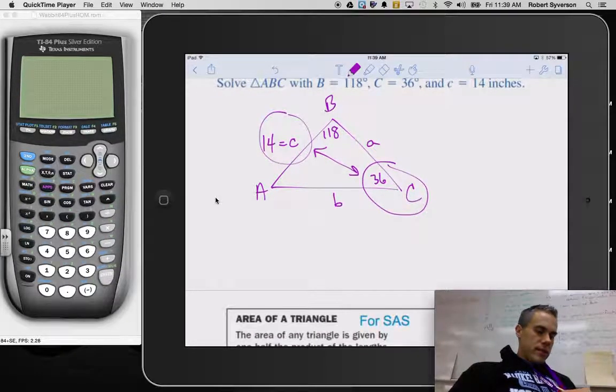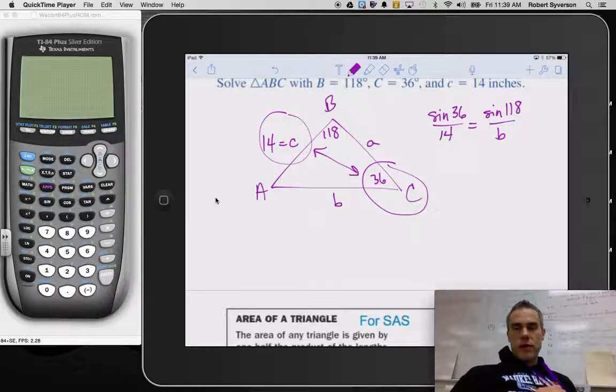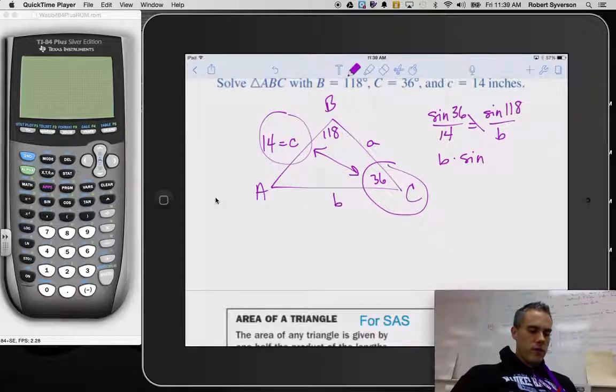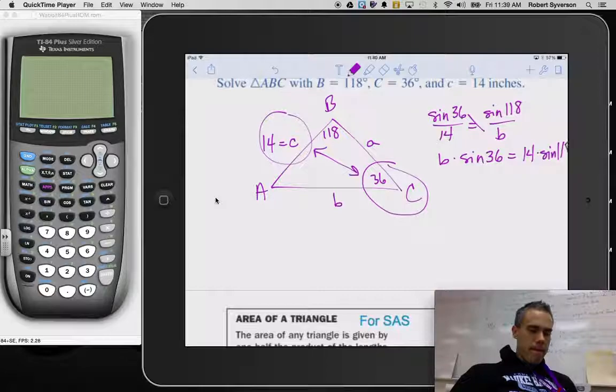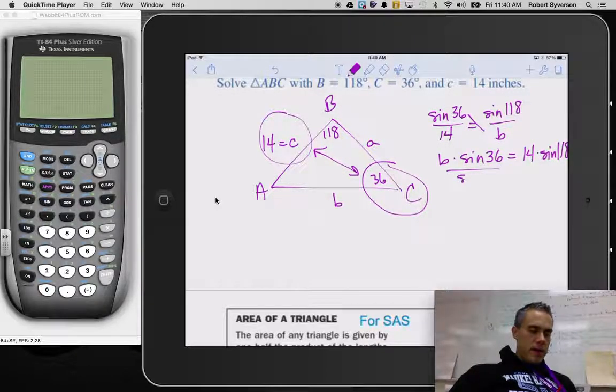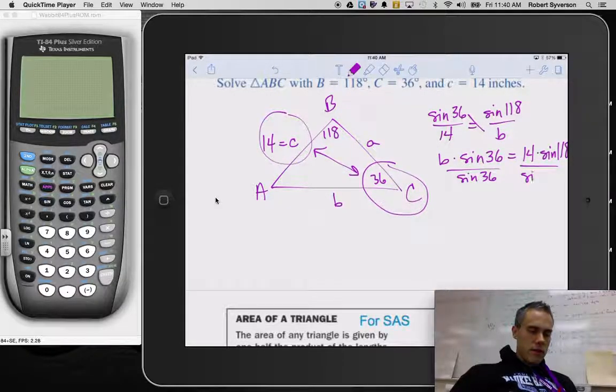I will say that the sine of 36 divided by 14 using that ratio is equal to the sine of 118 over side b. Then I'll use the cross product property. So I'm going to multiply across. So b times the sine of 36 is equal to 14 times the sine of 118. Then I divide both sides by the sine of 36 to leave side b by itself.